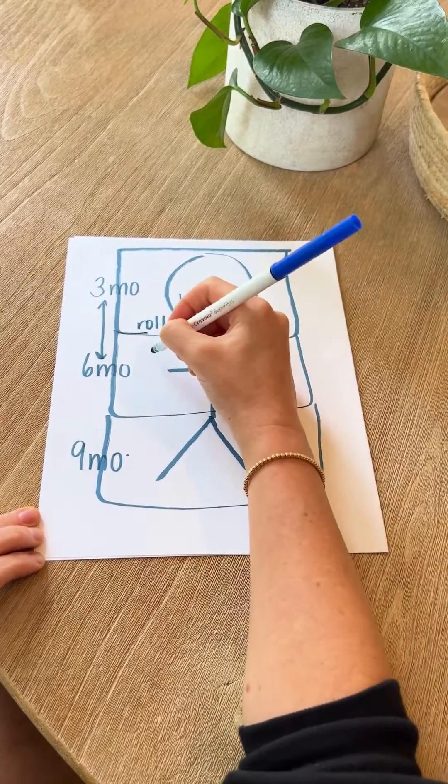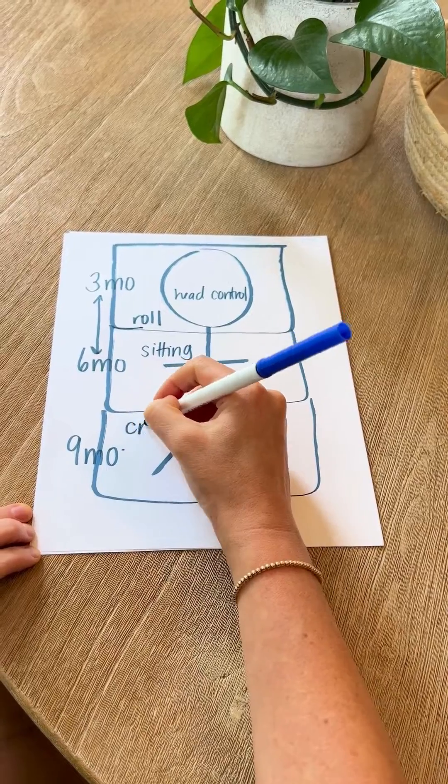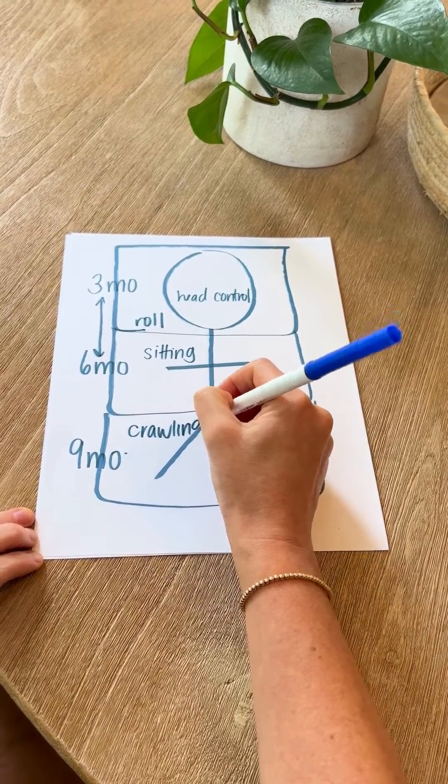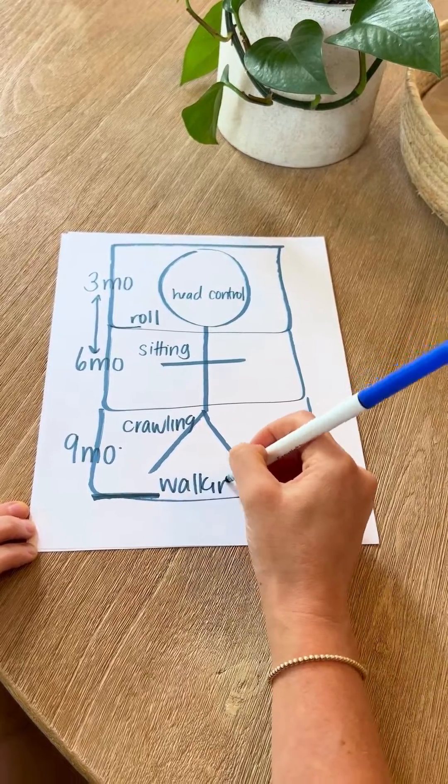At six months, around this time you're going to see sitting control. Around nine months you're going to see crawling. And on that last line on the feet, you're going to see 12 months for walking.